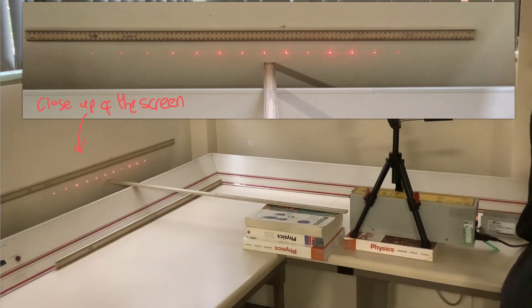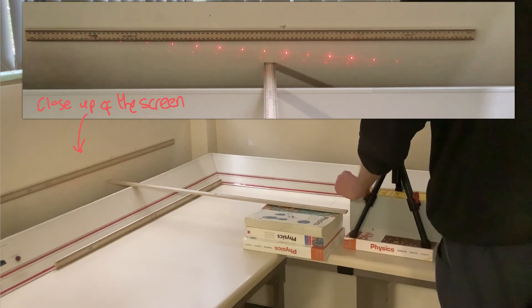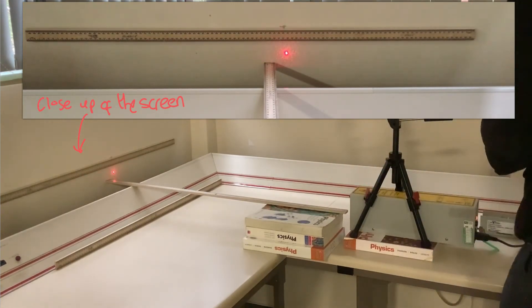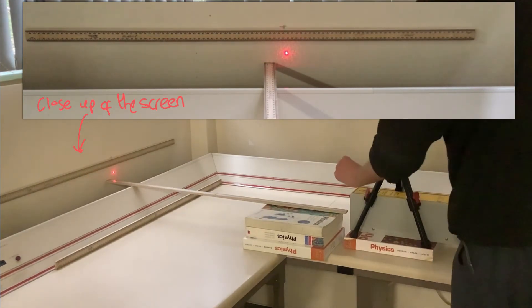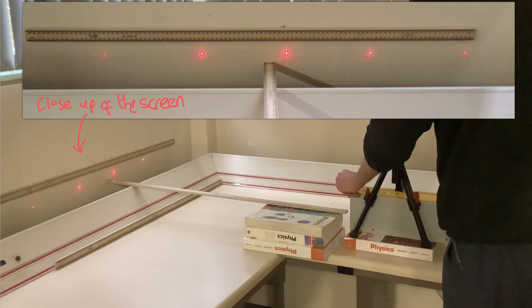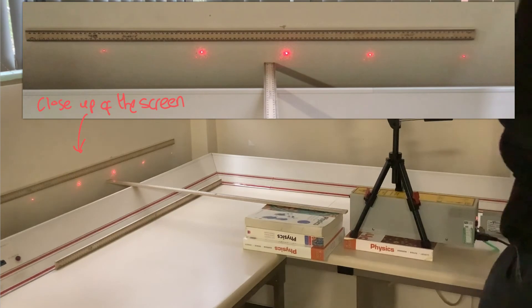Now let's change from the 80 lines per millimeter into our next diffraction grating at 300 lines per millimeter. And what do you notice? The change is there.